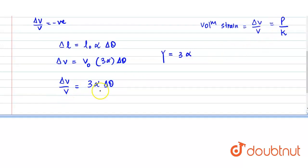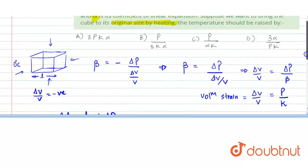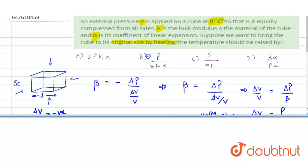So delta V by V becomes 3 alpha delta theta. So we can equate these two values. So from here, P by K equals to 3 alpha delta theta. So since we have to find the change in temperature, delta theta will become P divided by 3 K alpha. This is what the increase in temperature will be, which is given to us in option B.